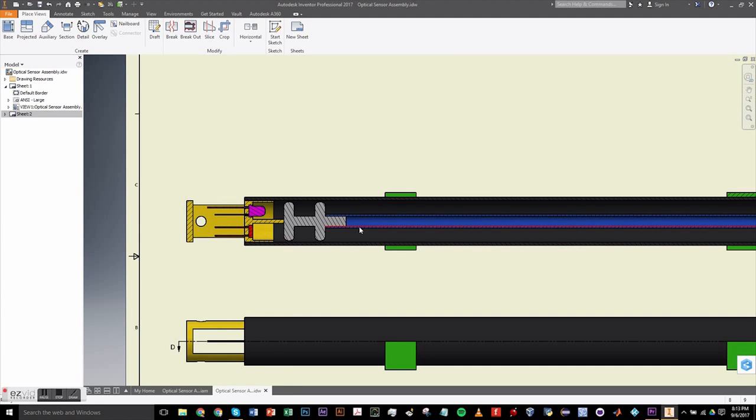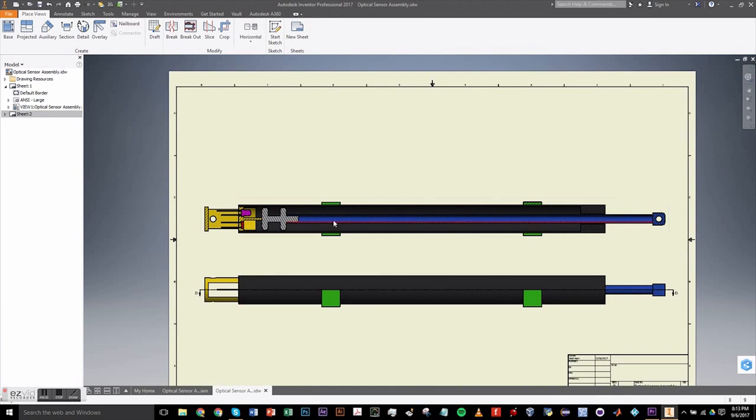So the idea is when you move the plunger further away then less light will be hitting the CDS cell. As a result you will be getting a less voltage reading on the Arduino and you can code in a measurement that gives you the distance in millimeters.